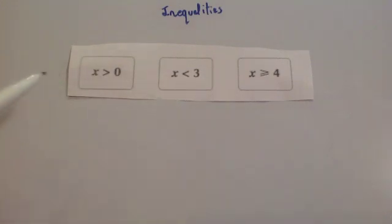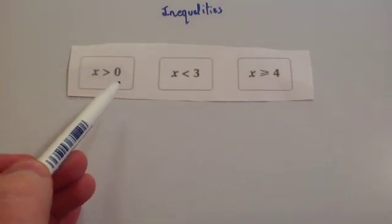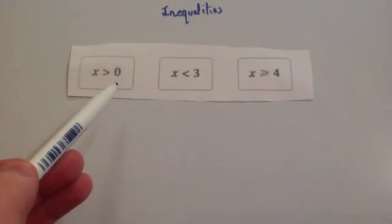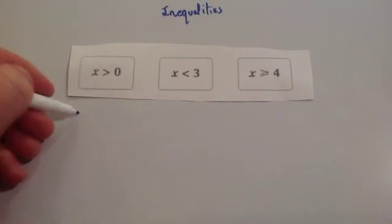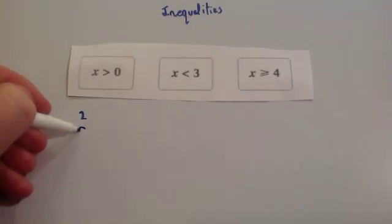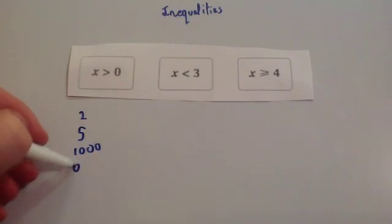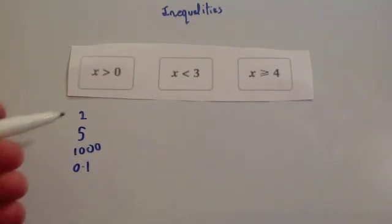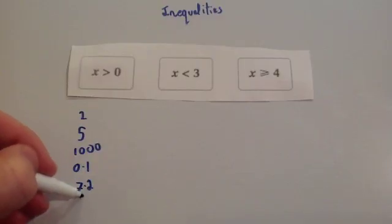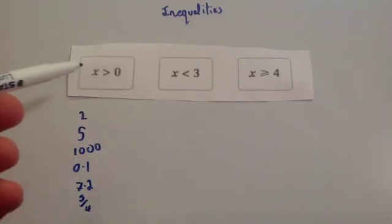Here we've got three inequalities. This one says that x is bigger than 0, meaning x can be any number that is bigger than 0 — it could be 2, 5, 1,000, 0.1, 7.2, three quarters — anything at all that is bigger than 0.